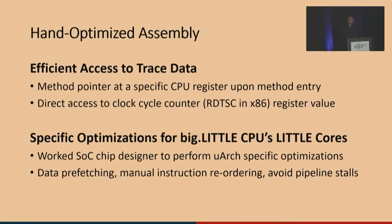Since Huawei also designed some of their own SoCs, we collaborated with chip designers so that we can make precise control on what, when, where, and how trace points are placed, and optimized for the specific CPU architecture. We also used variable-length trace point encoding, amortized to only eight bytes per trace point — a single 64-bit integer — which helped significantly with performance and maintainability of the assembly code.